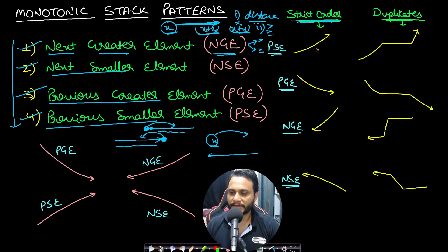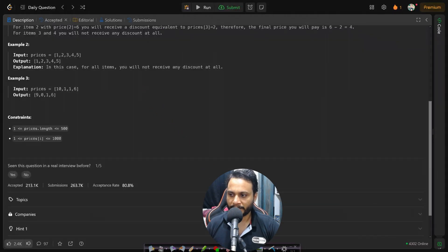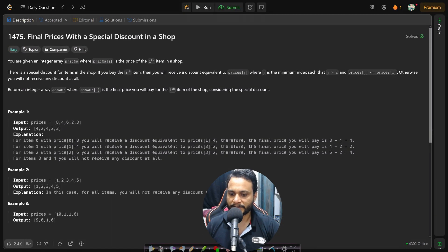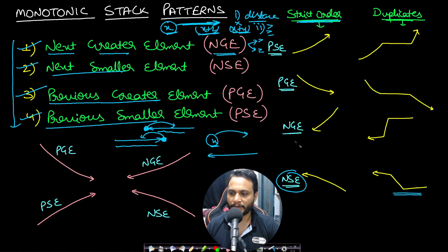In this particular problem we are solving the next smaller element, specifically the variant where we find the next smaller or equal item — because the condition is less than or equal to, not strictly less than. This means it is not strictly decreasing but a non-increasing type curve that we want to maintain.